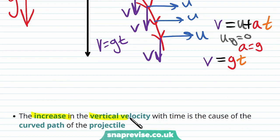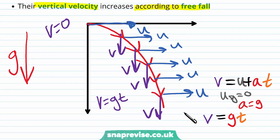The increase in vertical velocity with time is the cause of the curved path of the projectile. Because horizontally the velocity is staying constant — if we just had horizontal motion, it would just be a straight horizontal line. It's the change in the vertical velocity that is causing the projectile to curve downwards.